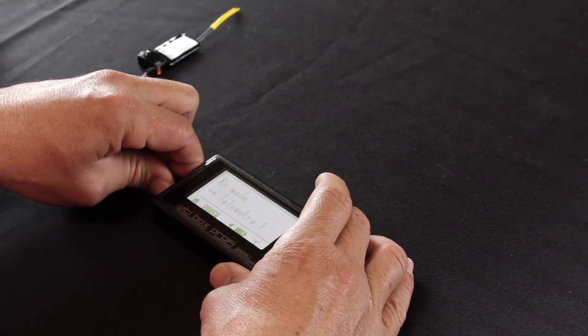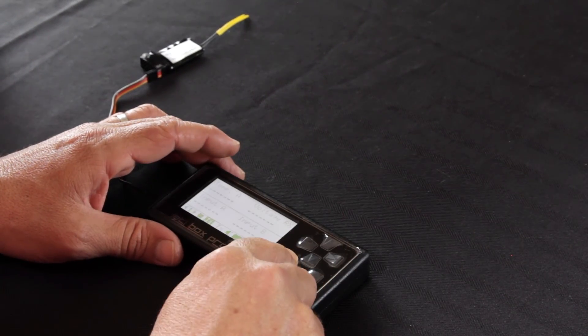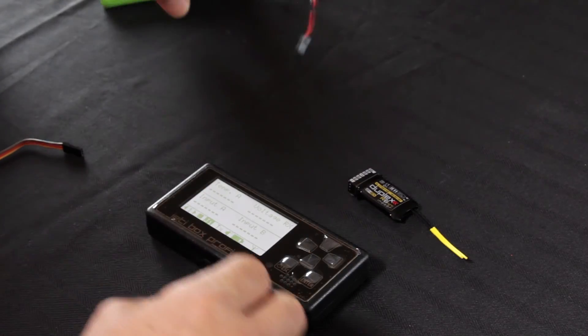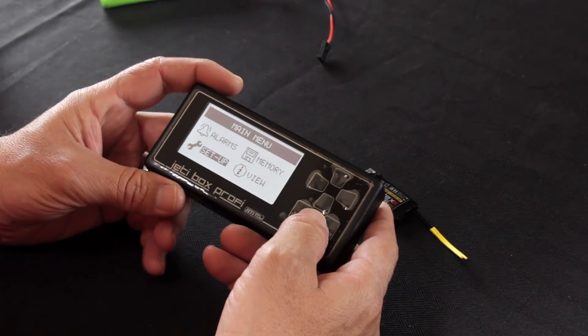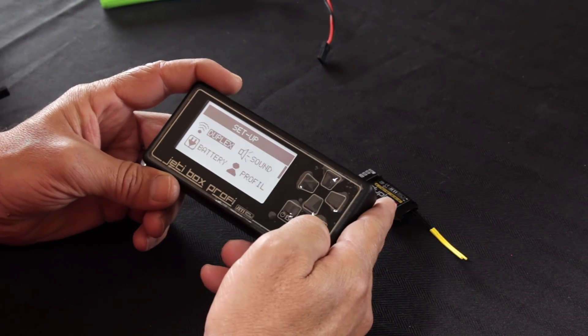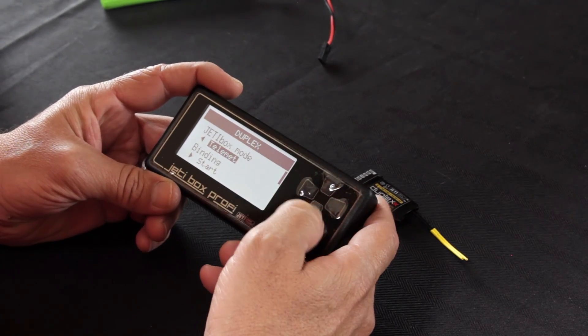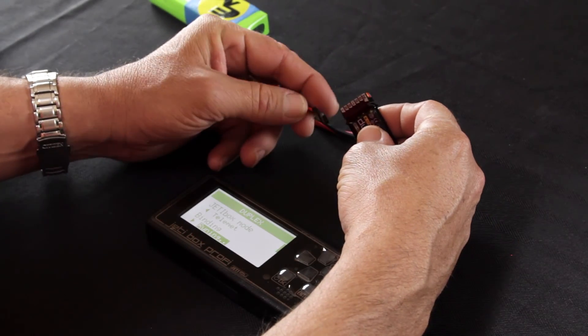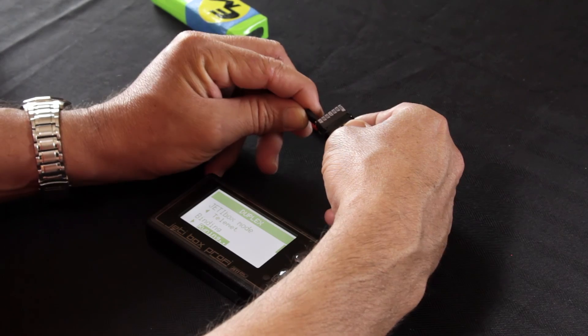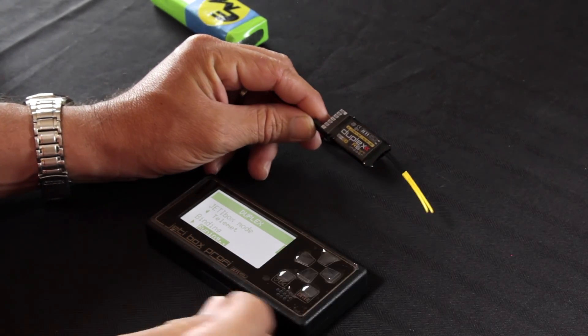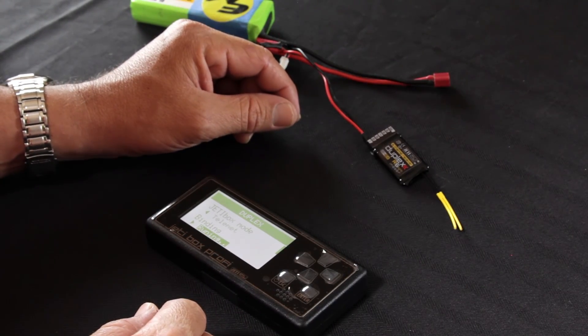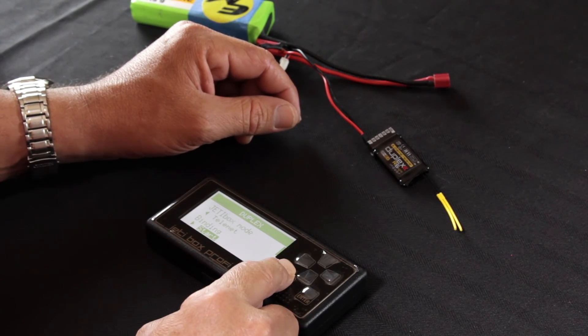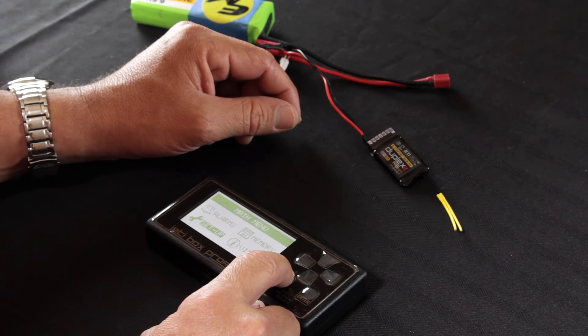Of course the next thing that you'll need to do is bind the receiver. We've already bound this receiver, but I'll show you the process for that. It's super simple. You're going to hit the Escape key into the menu, under Setup again, back into Duplex. Scroll down to Binding and click Start. It'll say Running. Once that's running, you can plug in your power supply to your receiver and let that pick up the receiver there. You see it says Bound and lets you know it's done. Once that's done, we'll escape back out of the system.